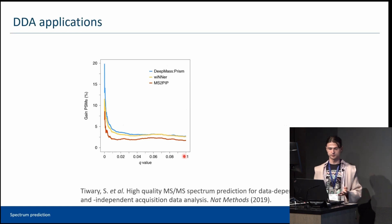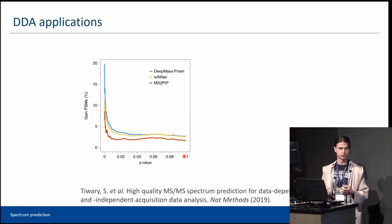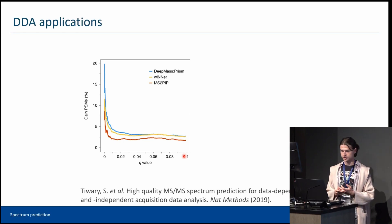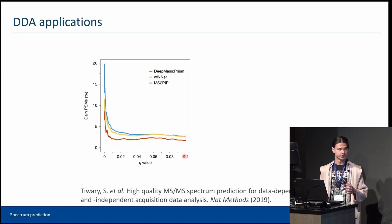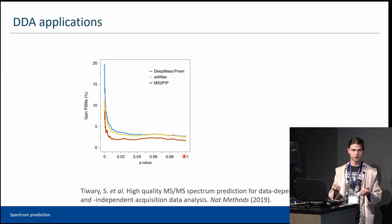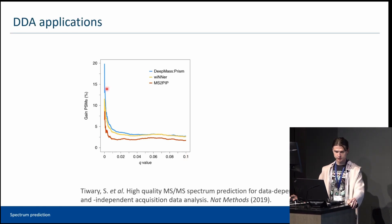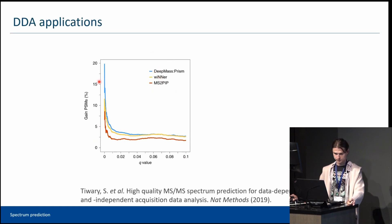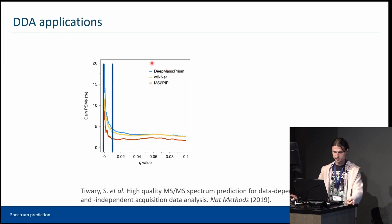Now let's see some projects where intensity prediction was utilized to improve peptide identification. First, DDA applications. In DDA, intensity information can be integrated into a search engine to improve its sensitivity, specificity, or both. For example, in this work, a HeLa human proteome dataset was analyzed with MaxQuant, and Andromeda's search score was augmented by predictions from several different models: DeepMass Prism, Wiener, and MS2PIP. As you can see, the improvement in sensitivity is Q-value or PSM FDR dependent, and it is higher at smaller Q-values.